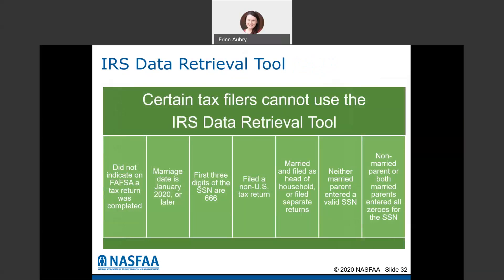Not every student or parent will be given the option to use the IRS data retrieval tool. You won't be given the option if you didn't file taxes, if your marriage date is January 2020 or later and your marital status doesn't match your tax status, if the first three digits of your social are 666, if the tax return wasn't a U.S. return, if you're married and filed as head of household or filed separate returns, or if neither parent entered a valid social security number.